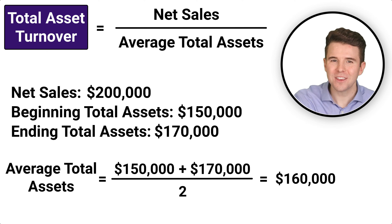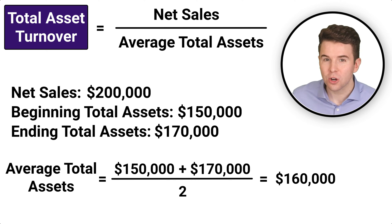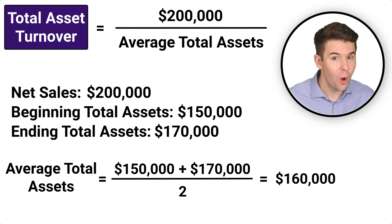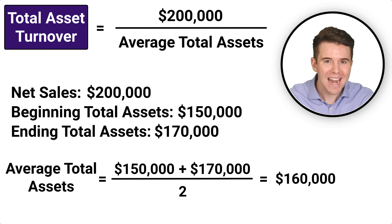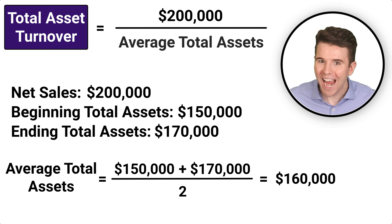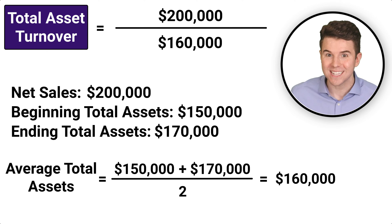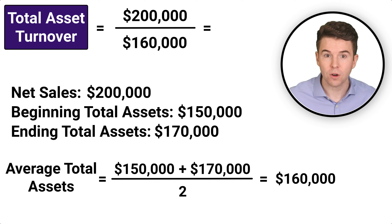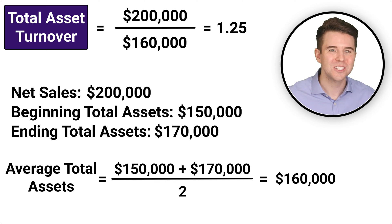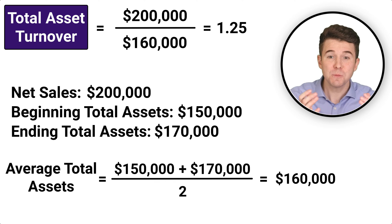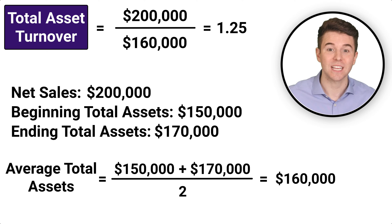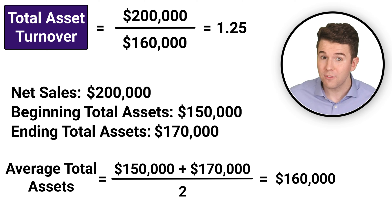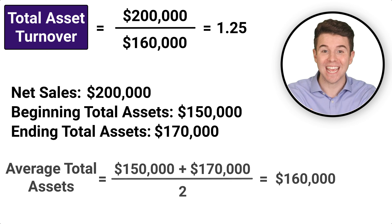Now, to calculate the total asset turnover ratio, we'll take our net sales of $200,000 and divide it by our average total assets of $160,000. This gives us a total asset turnover of 1.25. This means that for every dollar of assets the company owns, they generated $1.25 in net sales.